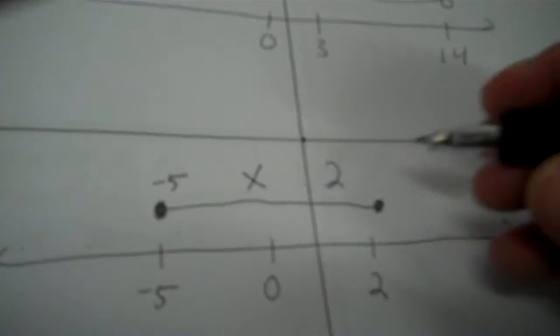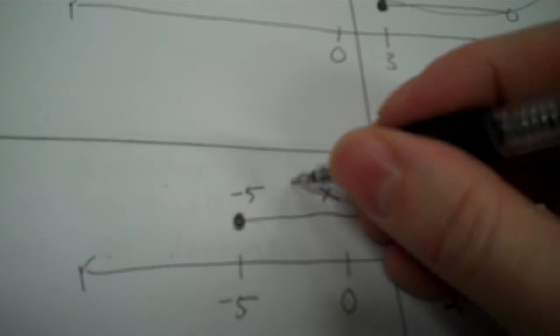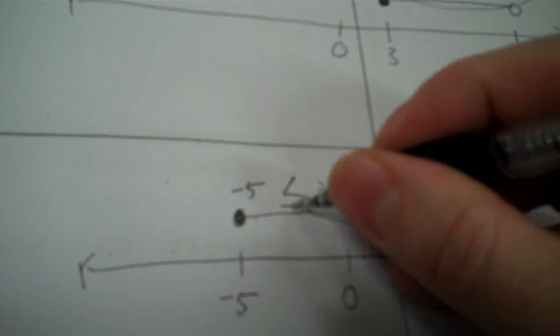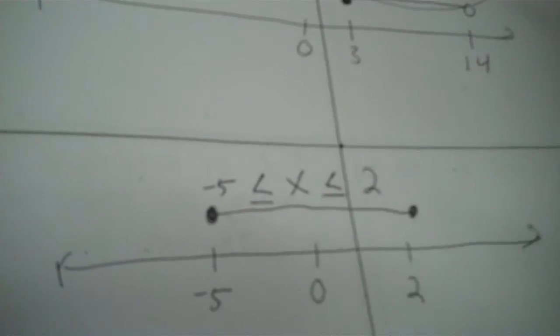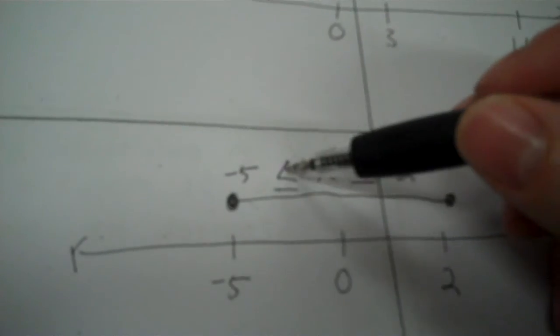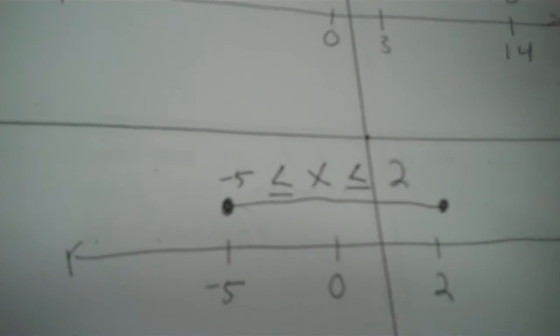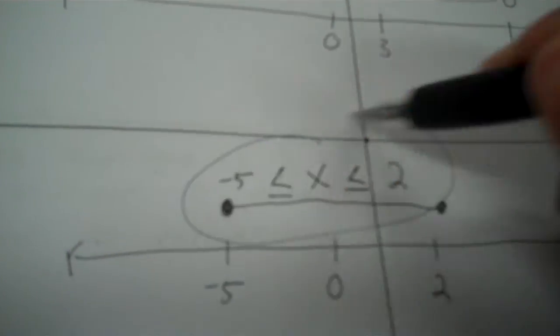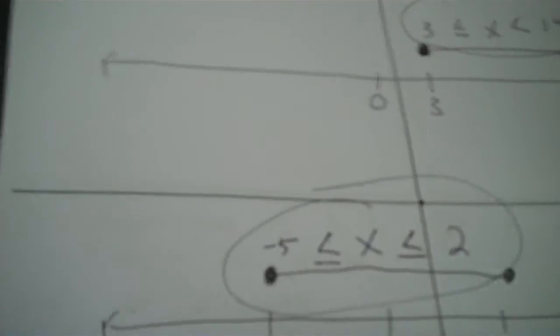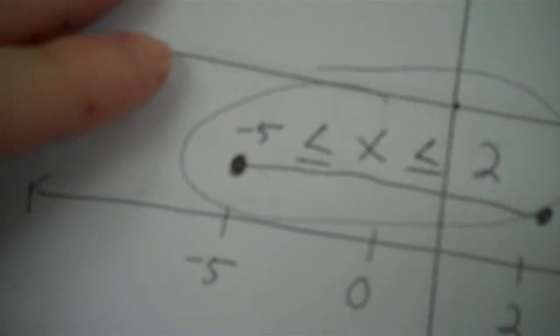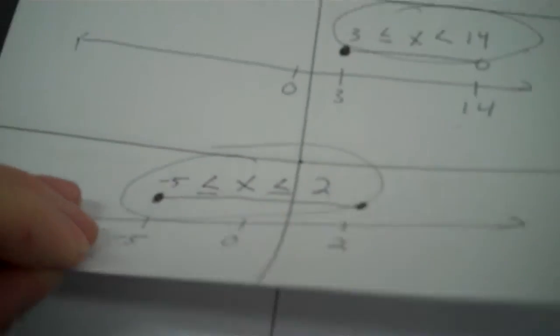Going this way, open it towards the X. This way, open it towards the number. The signs should actually be going the same direction in these. Negative 5, X — that tells people in mathematical terms that X is between negative 5 and positive 2.